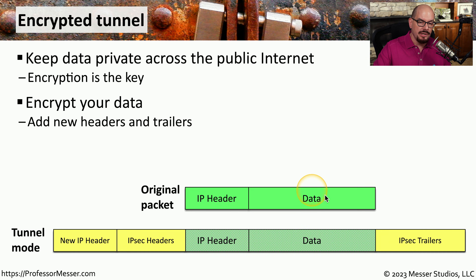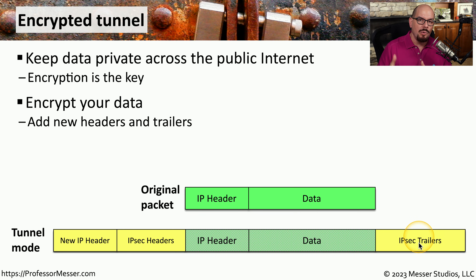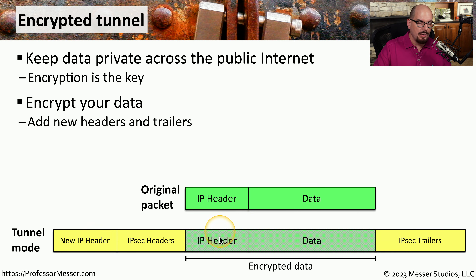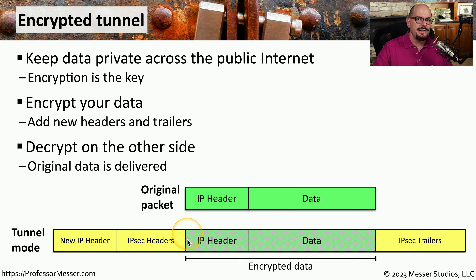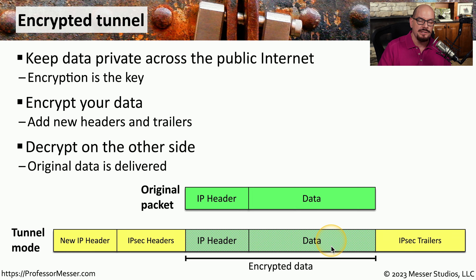We accomplish this by encrypting our original information and embedding it — or tunneling it — within other headers. In this example, we're encrypting the IP header and the data. To indicate where this encrypted data begins and ends, we wrap around it an IPsec header and an IPsec trailer. And to point all of this information to the appropriate IPsec concentrator, we add a new IP header. Once received by the IPsec concentrator on the other side, the concentrator removes the new IP header, the IPsec header, and the IPsec trailer, then decrypts the original IP header and data and sends the traffic on its way.